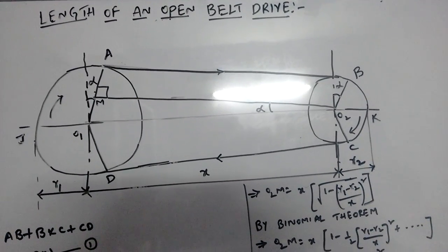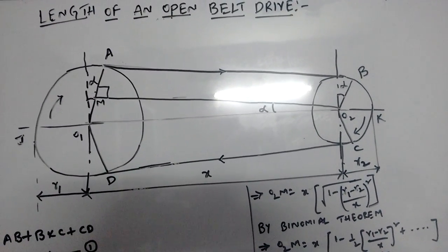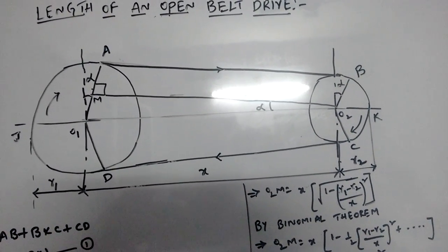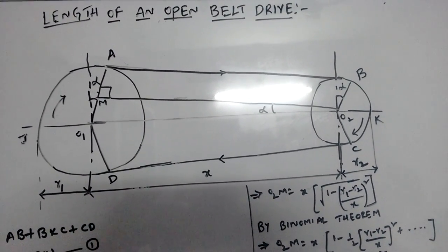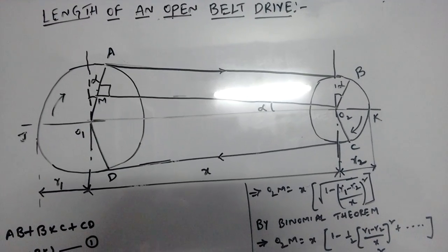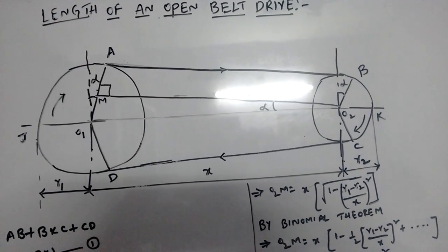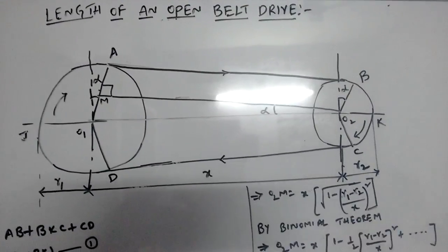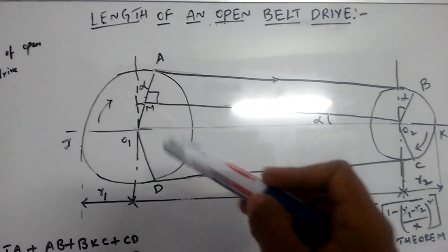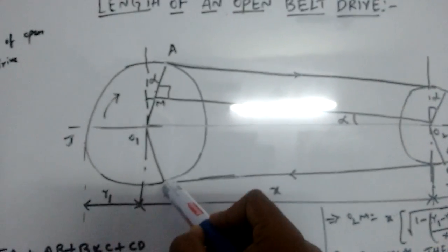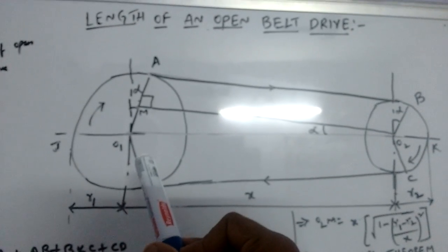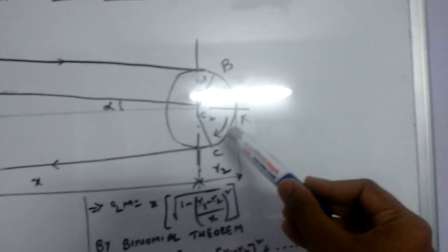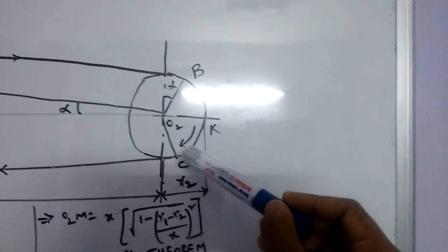Now let us consider A, B, C, D be the belt which is surrounded by these two pulleys. The belt leaves the first pulley at points A and D respectively, and the belt leaves the second pulley at points B and C.